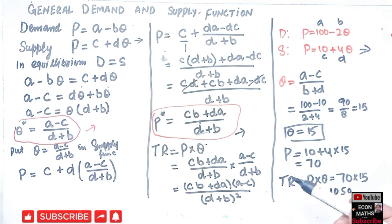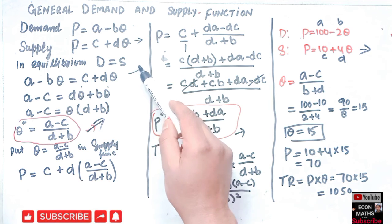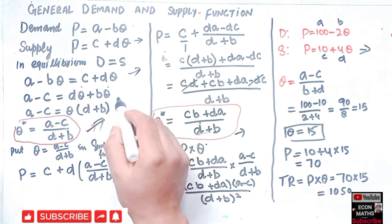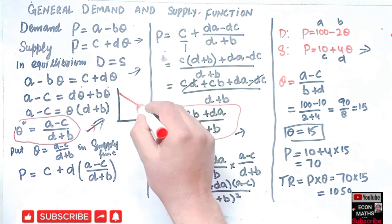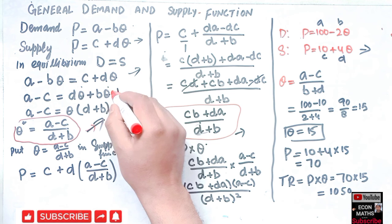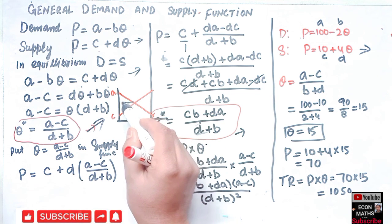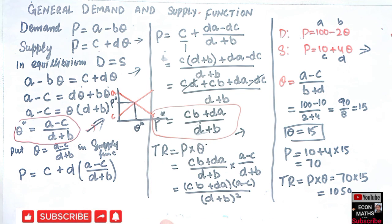We can use this shortcut formula to find the equilibrium price and quantity without solving the two functions. The graph will show the demand function with intercept a and the supply function with intercept C, and their intersection gives the equilibrium price and quantity. I hope I made myself clear — if you like this video, please subscribe and share. Thank you.